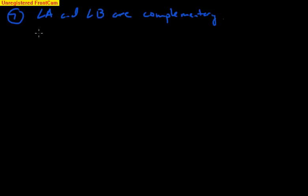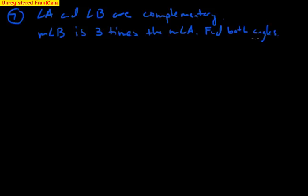A lot of people don't like algebra. Angle A and angle B are complementary. The measure of angle B is three times the measure of angle A. I want you to find both angles. So here's what we've got to do. We have to interpret what this word complementary means. We should know that complementary means they add up to 90 degrees. So immediately, measure of angle A plus the measure of angle B equals 90 degrees. Immediately you should do that.